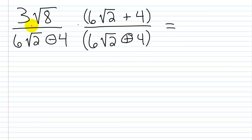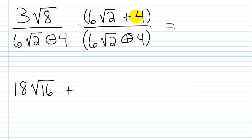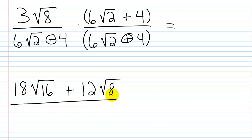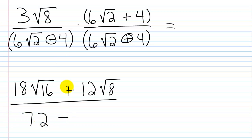Starting in the numerator, I'm going to use my distributive property. I'm going to multiply 3 times 6 — that's 18. And then square root of 8 times square root of 2 would be square root of 16. Then plus — I've got 3 times the square root of 8 times 4, so 3 times 4 is 12, giving 12 times the square root of 8. Then in the denominator, I use my special rule: first times first — 6 times 6 is 36, and square root of 2 times square root of 2 is 2, so 2 times 36 is 72. Then minus last times last — 4 times 4 is 16.